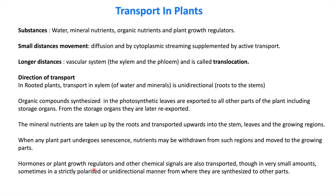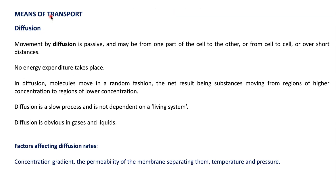Hormones and plant growth regulators are transported in small amounts and in a unidirectional way from where they are synthesized to other parts of the plant body. The first transportation mechanism we will study is diffusion. Movement by diffusion is a passive process and does not require energy. It occurs over short distances, such as from one part of a cell to another, or one cell to an adjacent cell.